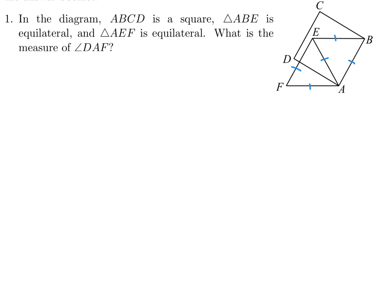DAF is this angle in here, right? Well, this would be 60 because that's equilateral. This whole thing is 90 since that's obviously part of a square, so that means this would be 30. And since this would be 60, then that means this would also be 30. So not too much difficulty to figure out that angle DAF is 30 degrees.